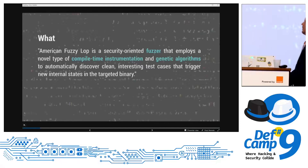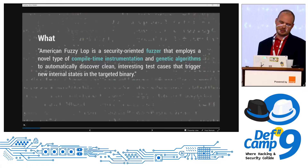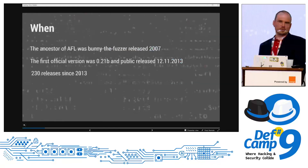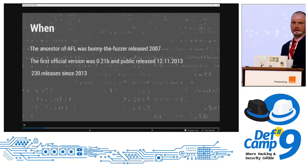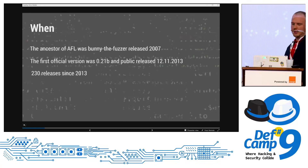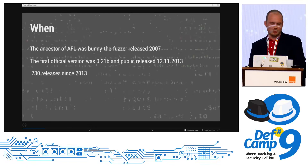So I just copied the definition. It's a security-oriented fuzzer that employs a novel type of compiled instrumentation and genetic algorithms to automate everything, including discovery of interesting test cases and strategy to choose another one. I did small research because I was interested when it was created. As an ancestor of it, there was Bunny the Fuzzer, released in 2007. Then the first release of AFL happened in 2013, and since that time there were 230 releases.